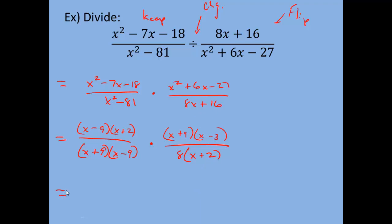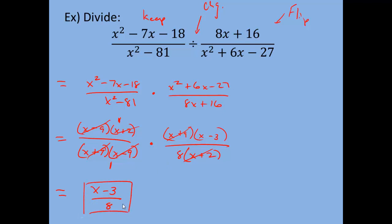Now cancel: anything in the numerator can cancel with anything in the denominator as long as they're identical. x minus 9 cancels with x minus 9. x plus 2 cancels with x plus 2. x plus 9 cancels with x plus 9. x minus 3 has nothing to cancel with, and the 8 in the denominator can't cancel with anything. Multiplying straight across, the numerator is 1 times x minus 3, which is just x minus 3, and the denominator is 1 times 8, which is 8. The answer is x minus 3 over 8.